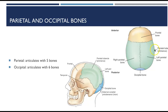As you can see in this picture, the parietal tubercle on each side marks the widest portion of the patient's skull. Moving on to the occipital bone — it articulates with six bones: two parietals, two temporals, the sphenoid, and the atlas of the C-spine.